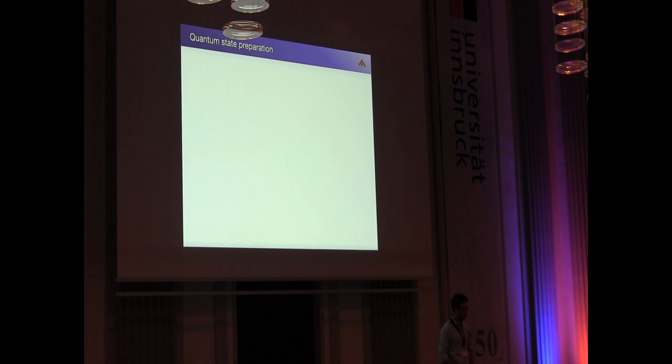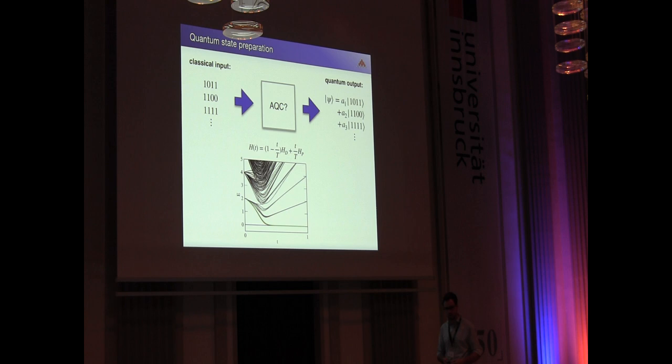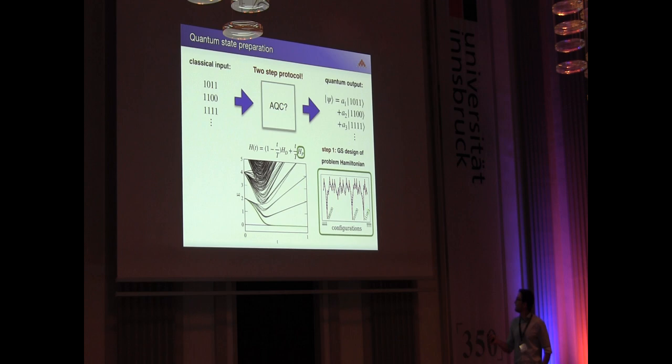If one has all these nice experiments in quantum simulation in mind where they use Hamiltonian dynamics, why don't we use adiabatic quantum computation for this kind of task? What we have in mind is simply a linear switching schedule between a driver and a problem Hamiltonian. This splits for us into a two-step protocol where the first step is we have to design the problem Hamiltonian, meaning we want to have the classical input as the degenerate ground states of this problem Hamiltonian. The second step would be that we generate these superpositions via quantum annealing in this degenerate ground state manifold.